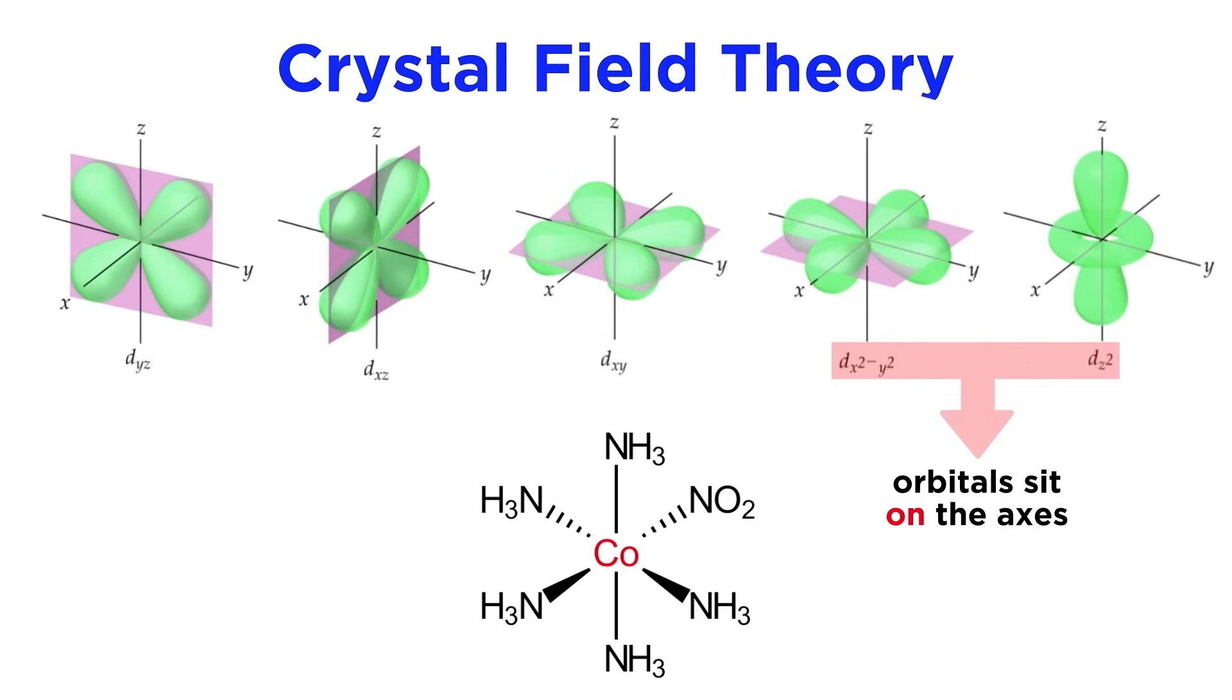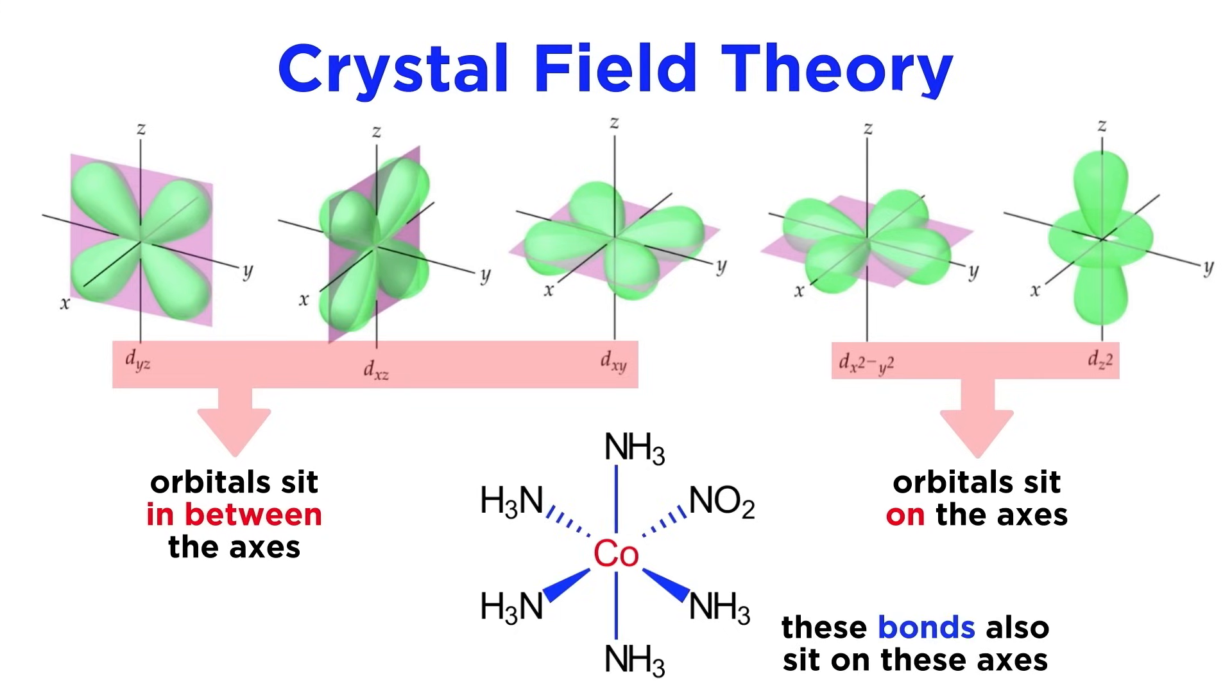We must note that two of the d orbitals, the dx squared minus y squared and the dz squared orbitals, have lobes that extend on the x, y, and z axes, meaning that electron density is sitting on these axes, whereas the other three orbitals have lobes that sit in between the axes. Looking at the octahedral complex, the bonds to the ligands also sit on these axes, which means that in order for ligands to approach the metal atom, their point charges must repel the electron density in these two orbitals.